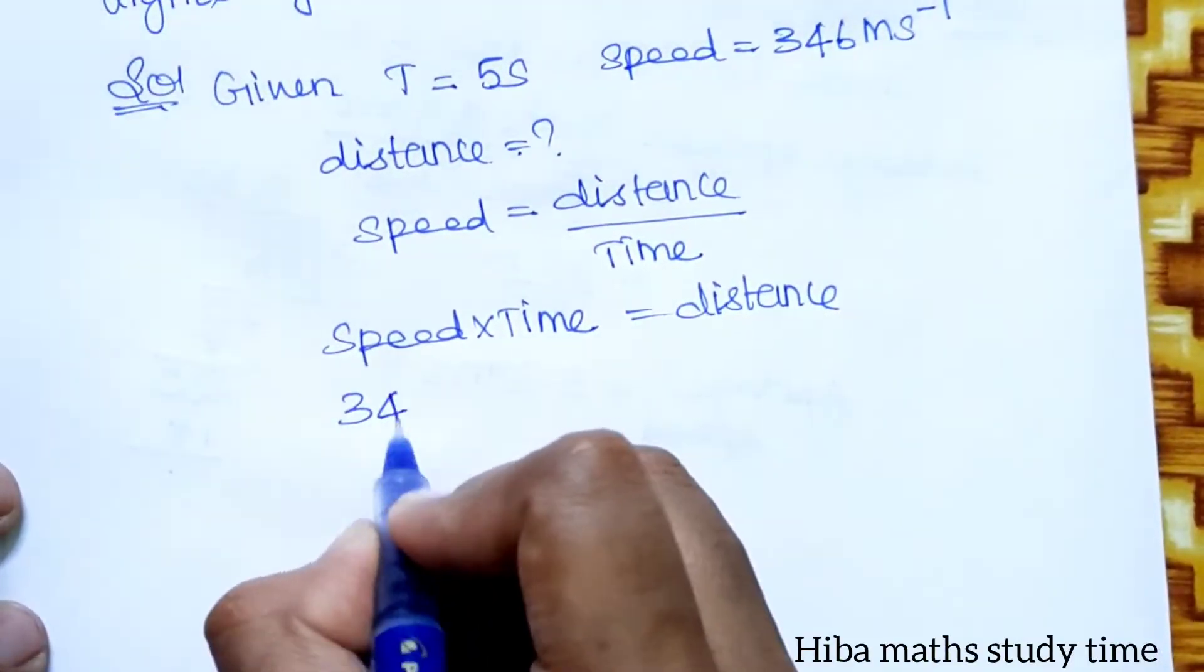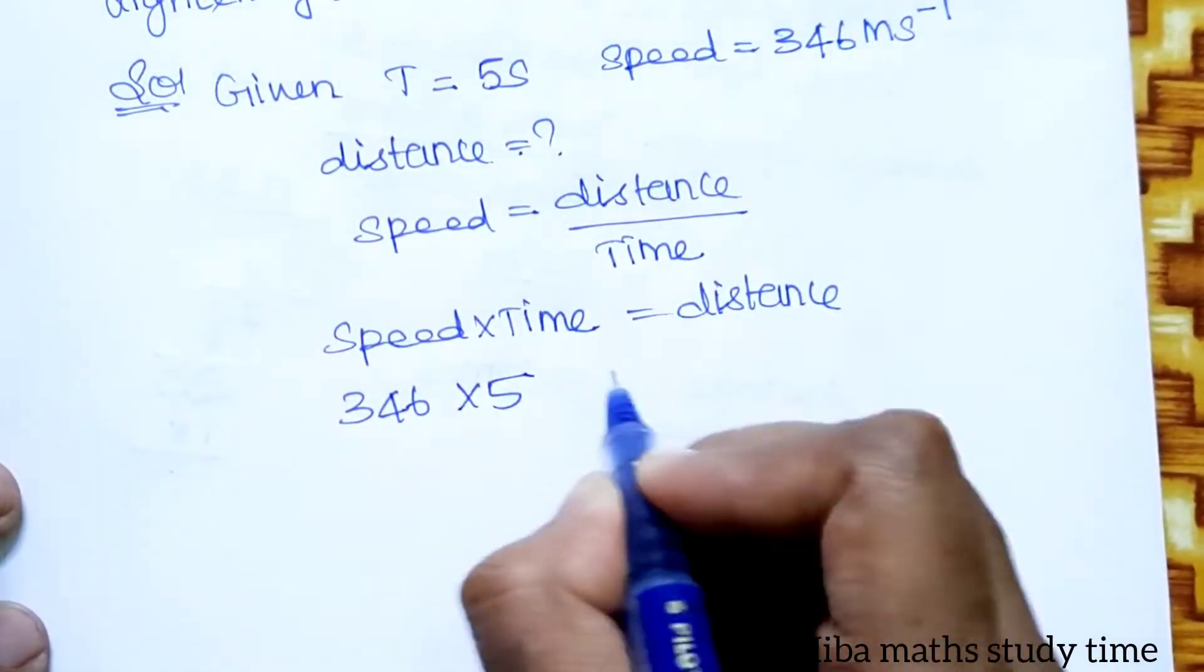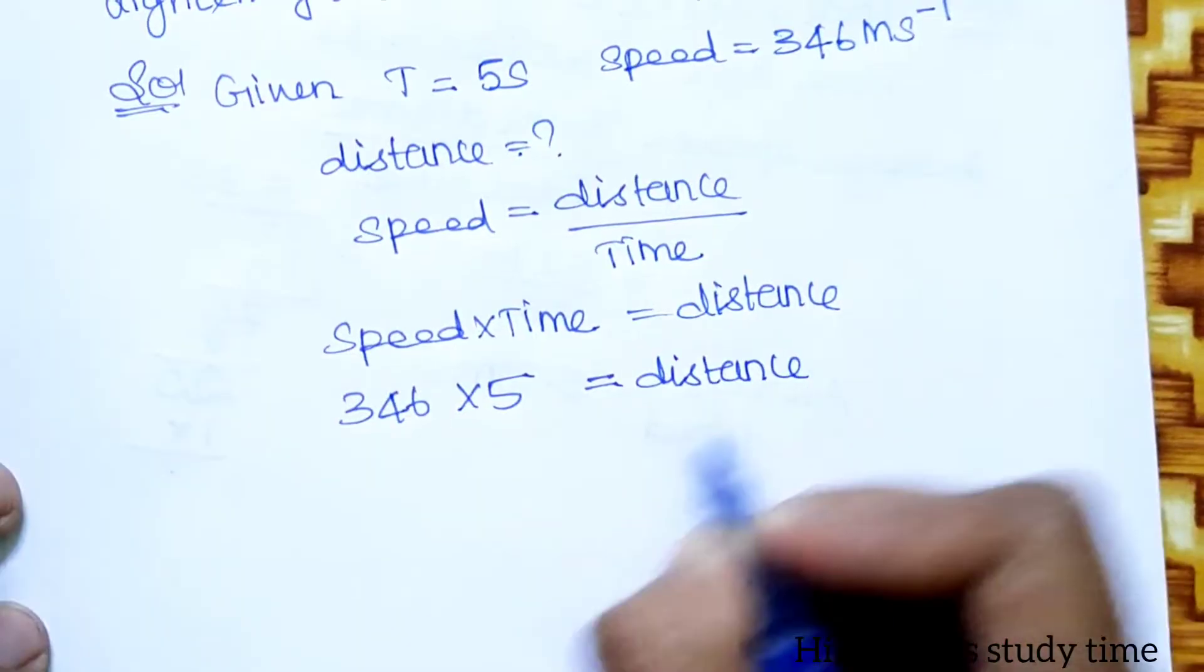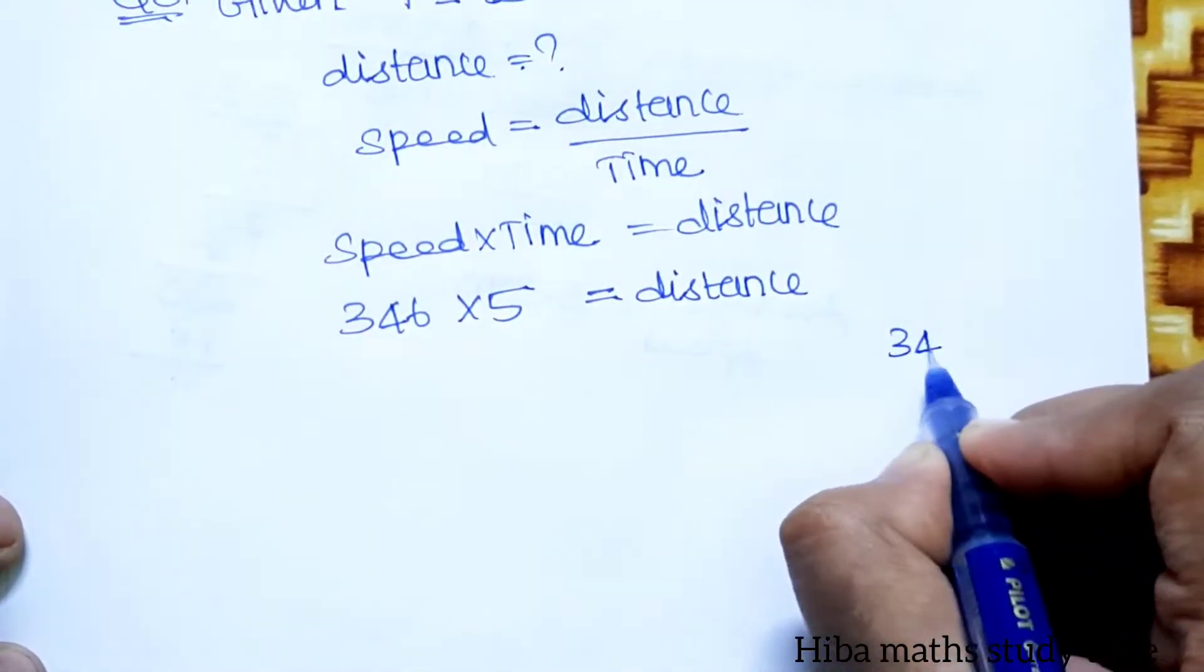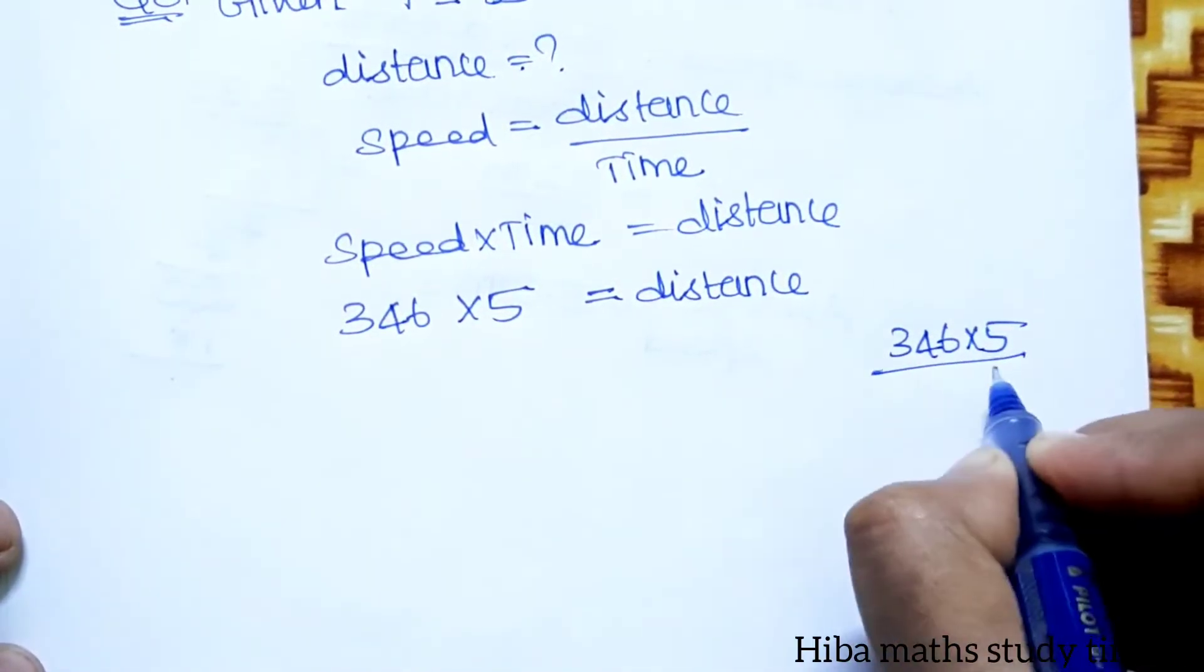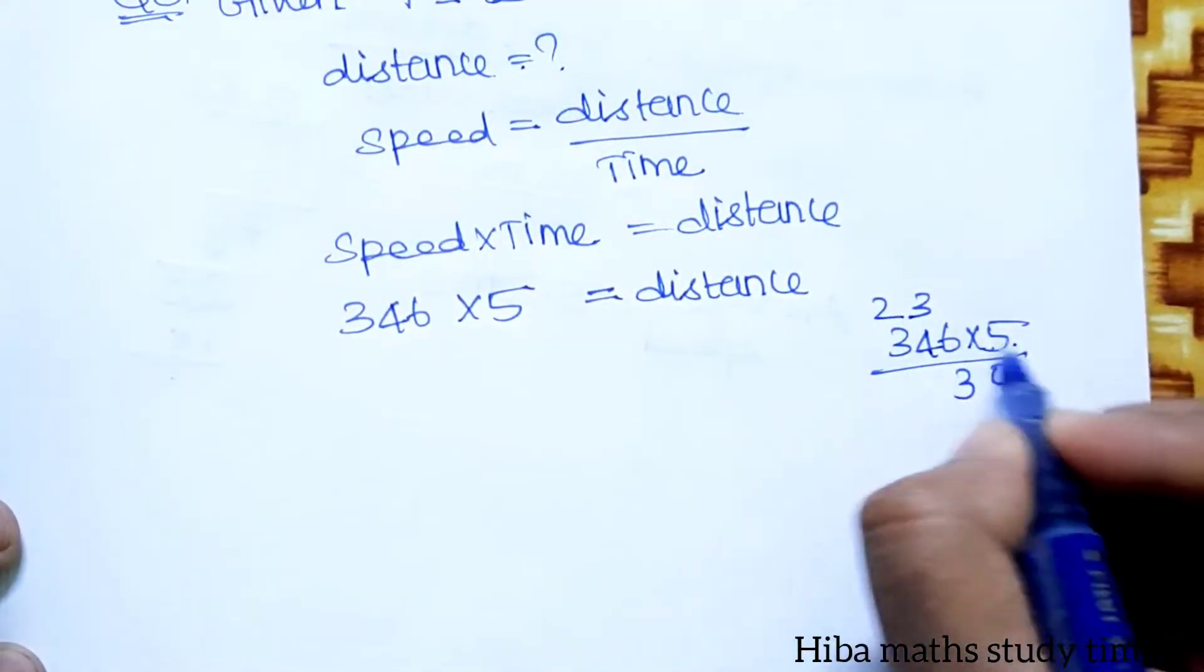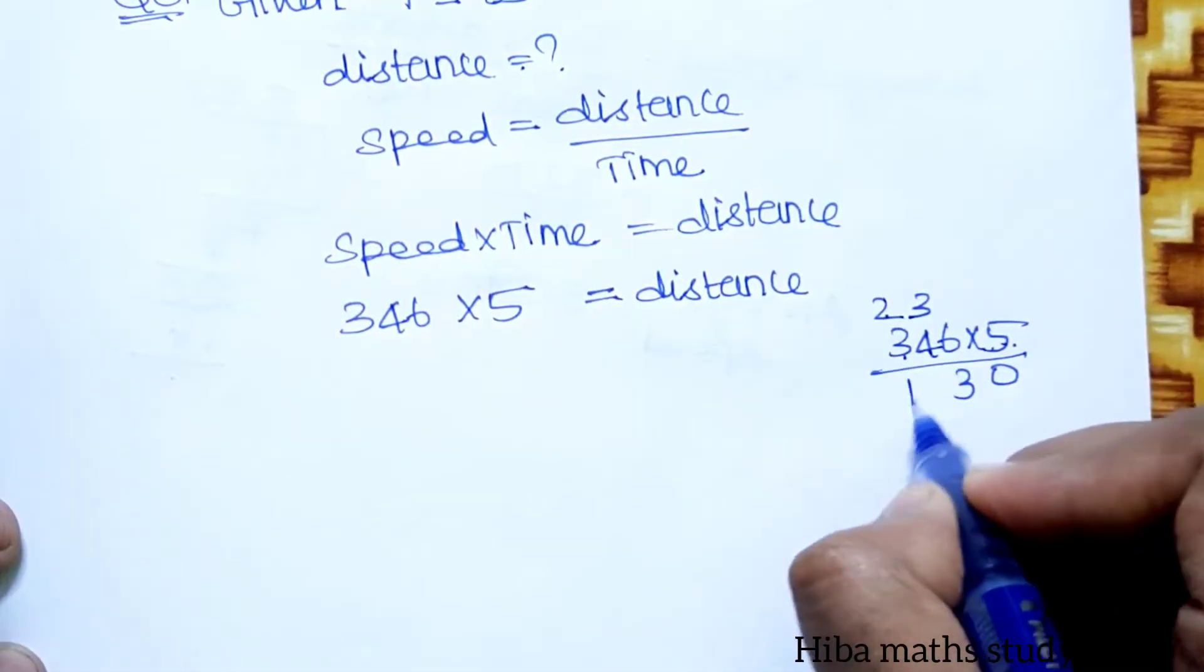Speed is 346, time is 5. Now multiplying: 346 times 5 equals 1730 meters.